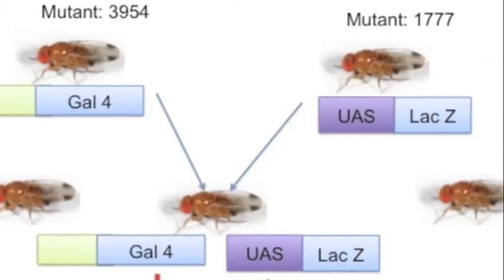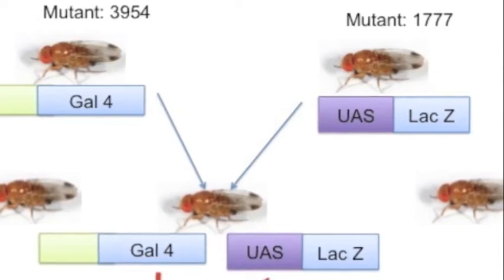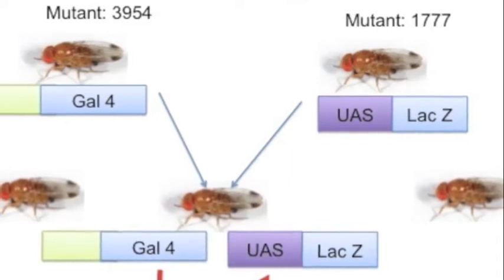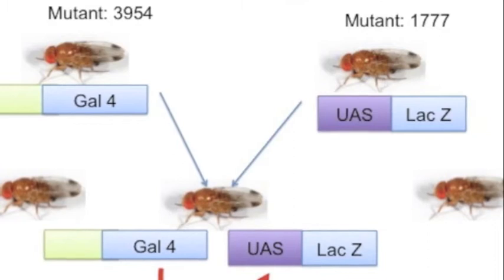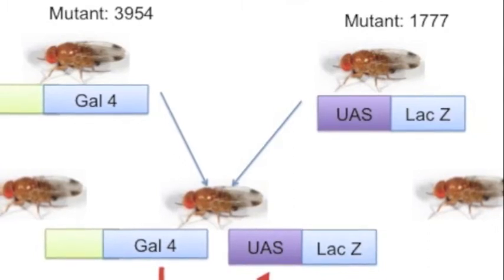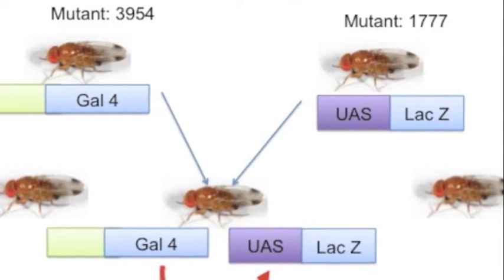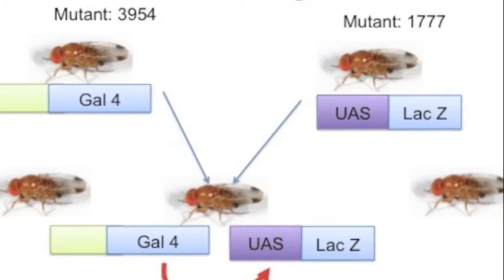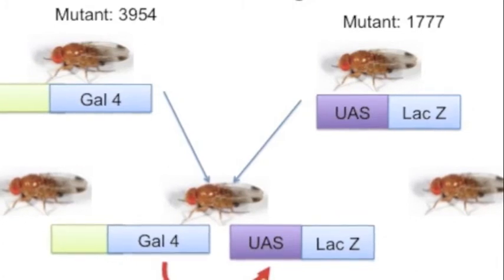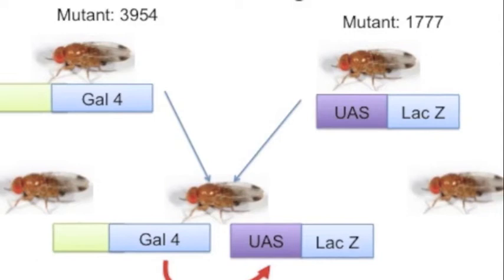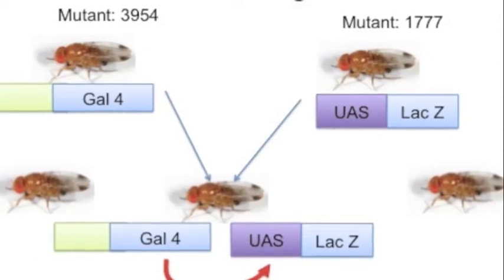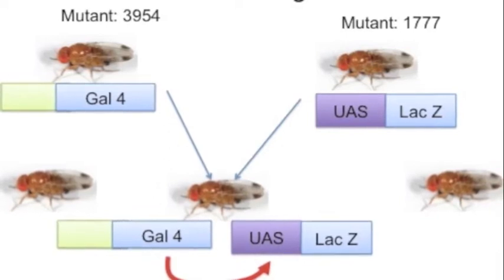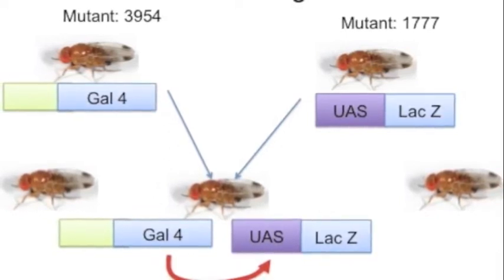In this experiment we will use two strains of flies. One, mutant 3954, contains the gene for Gal4. Another strain, mutant 1777, contains the UAS promoter linked to LacZ, which produces beta-galactosidase. If we breed these two strains, we should get some specimens which contain both genes and therefore will be able to drive the production of LacZ from Gal4 binding to UAS.